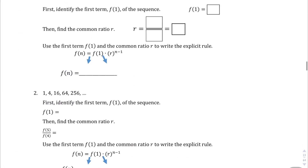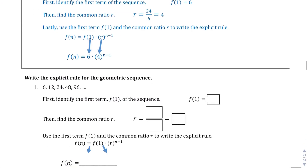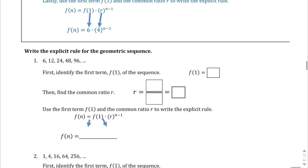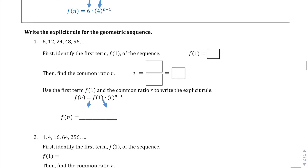Moving on to page 23, we're asked to write the explicit rule for this geometric sequence. f of 1, the first term right there, is 6. To find the common ratio, we're going to divide the second term by the first term. In this case, 12 divided by 6 gives us 2 — a common ratio of 2. So f of 1 is 6, the ratio is 2, giving us f of n equals 6 times 2 to the power of n minus 1.